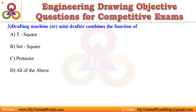Question 3. Drafting machine, or mini-drafter, combines the function of: A. T-Square, B. Set square, C. Protractor, D. All of the above. Answer is All of the above.